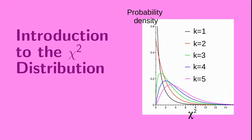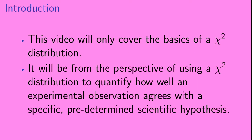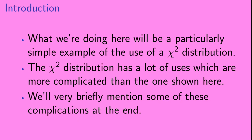Welcome to Introduction to the Chi-Squared Distribution. The Chi-Squared Distribution is a very useful tool for comparing experimental data with the predictions of a scientific hypothesis. This video will cover the very basics of a Chi-Squared Distribution, from the perspective of using it to quantify how well an experimental observation agrees with a specific predetermined scientific hypothesis. This will be a particularly simple example, and we will briefly mention some more complicated uses at the end of the video.